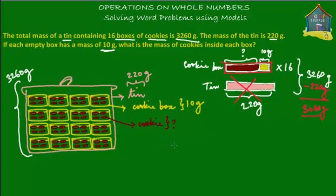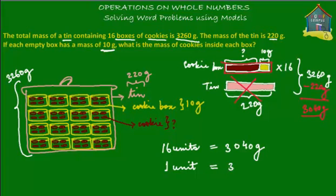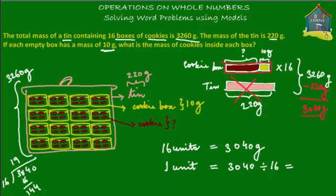So what can we write down from here? 16 cookie boxes with cookies in them have a mass of 3040 grams. How much is just 1 cookie box with cookies in it? That is equal to 3040 divided by 16, which equals 190 grams. Just 1 unit is equal to 190 grams.